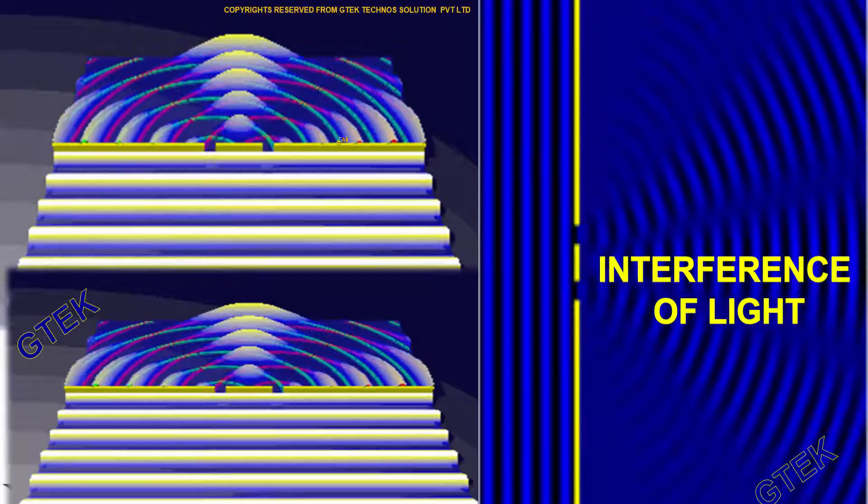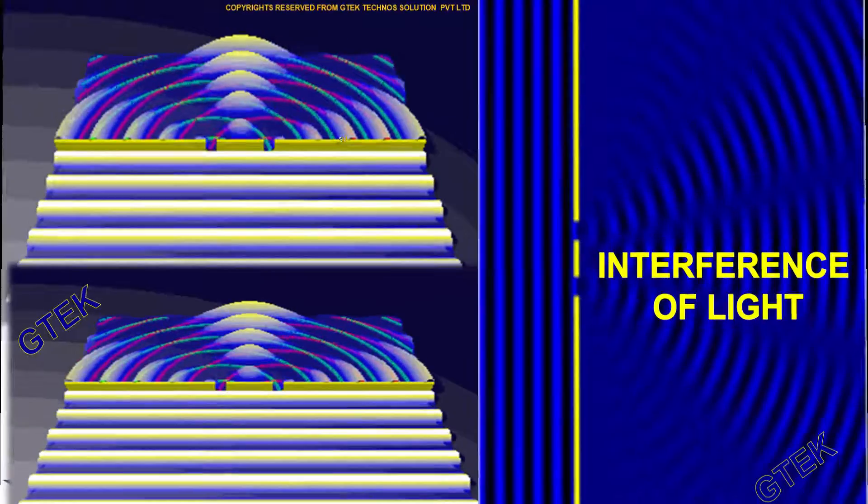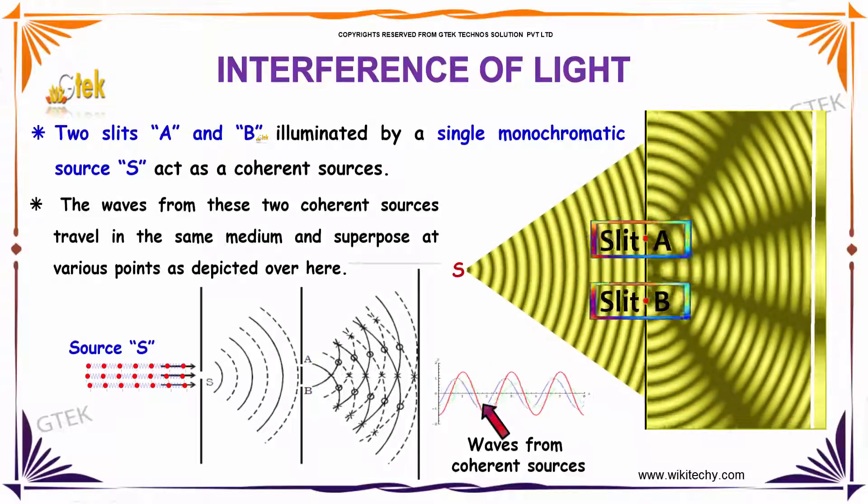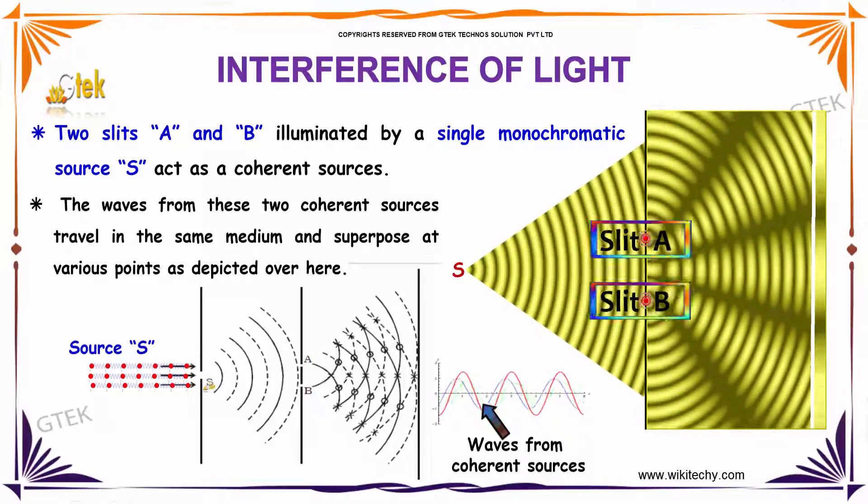Now, we'll talk about the interference of light. Two slits A and B illuminated by a single monochromatic source S act as coherent sources.